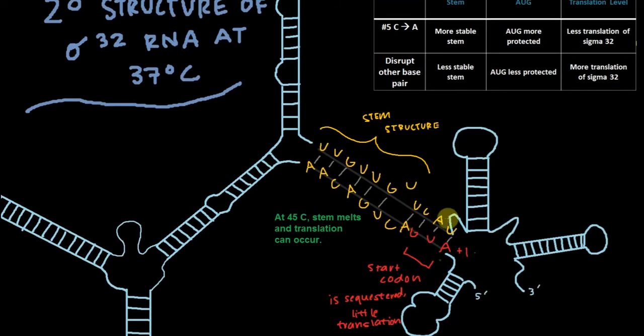First it has the stem structure. And within that stem structure here is the start codon, so A-U-G. And currently, at 37 degrees C, it's sequestered, so there's very little translation. It's stuck in the stem structure, and the ribosome can't really come on right here. Here's the 5' end of the RNA, and here's the 3' end.